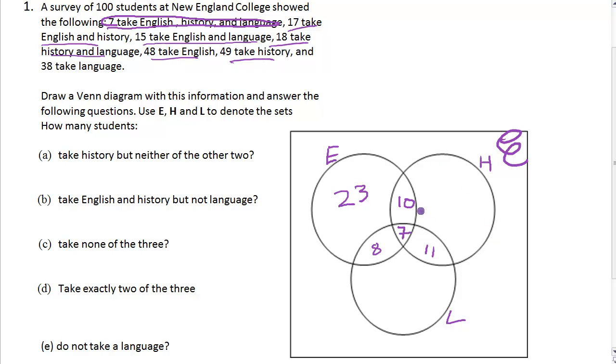49 take History. Let's take off the 10, that's 39. Take off 7 is 32. Take off 11 leaves us 21.